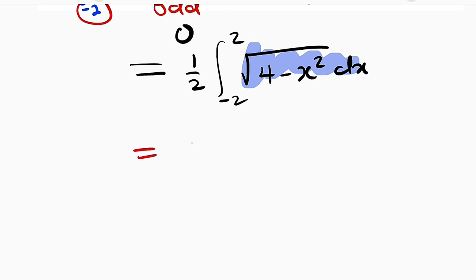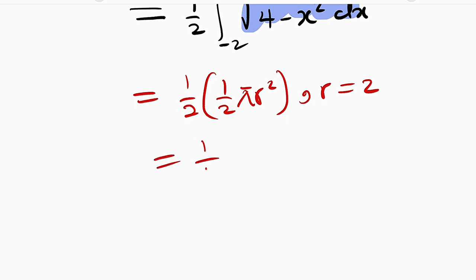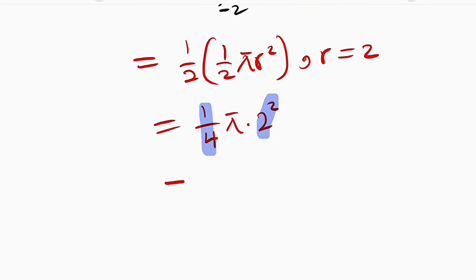So this is equal to 1 over 2 multiply by the area of a semicircle which is half the area of a circle, where our r is equal to 2. This is equal to 1 over 4 of pi multiplied by 2 squared. 2 squared is 4. And therefore this will cancel this automatically. All we have left is pi. Therefore our answer is pi.